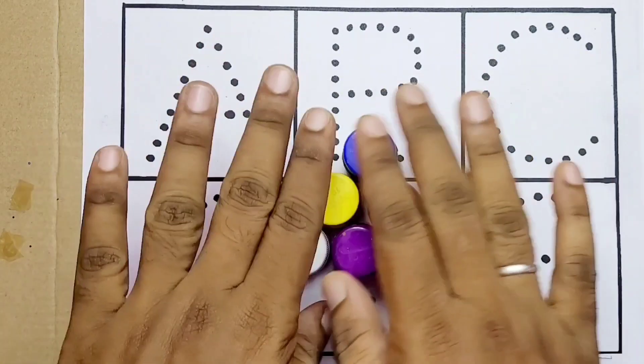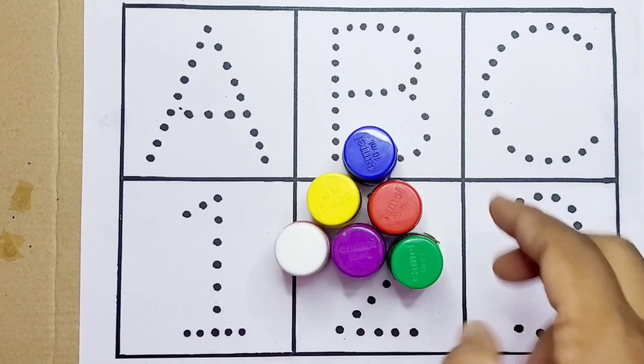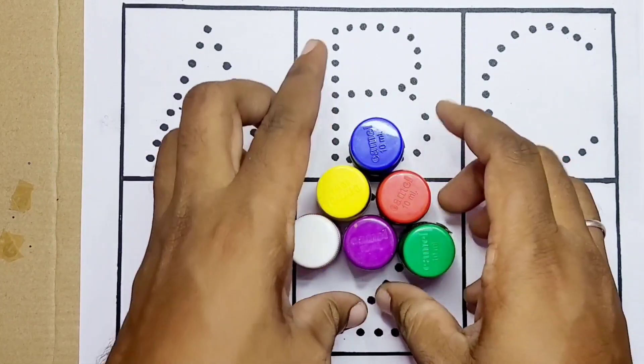Hello kids, welcome back to MG Colors. Today we are going to color ABC and one, two, three.